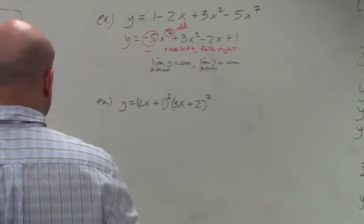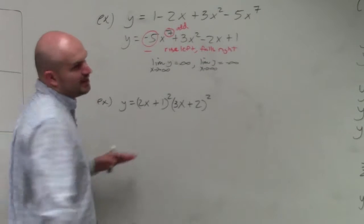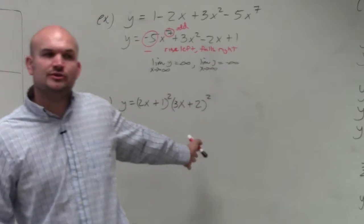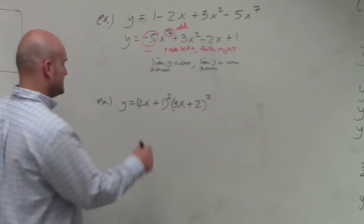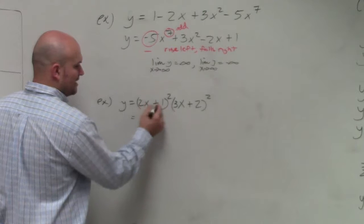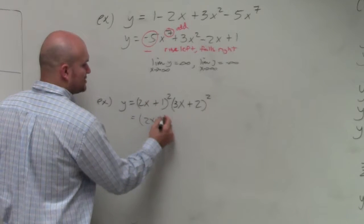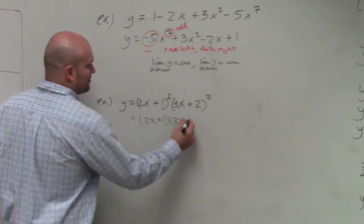As you guys are looking at these, hopefully you avoided doing all this mathematical notation. One thing I want you to understand is anything multiplied by itself, 2x plus 1 squared, is really 2x plus 1 times 2x plus 1.